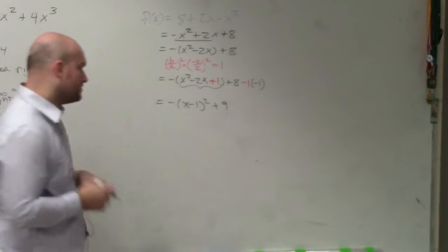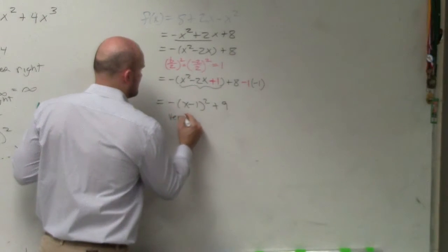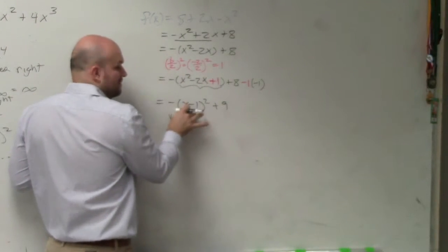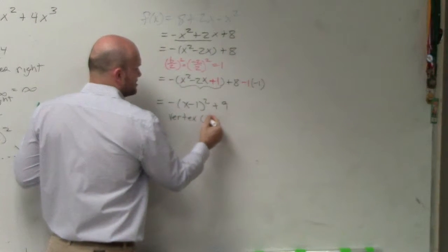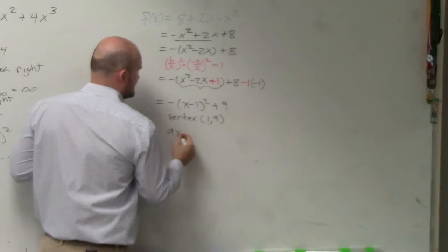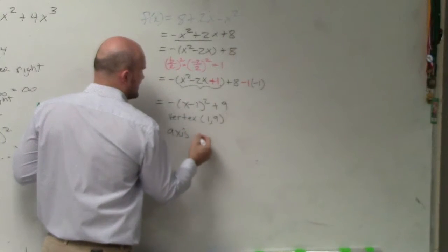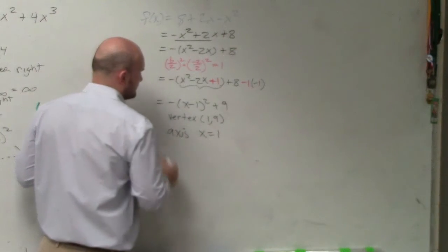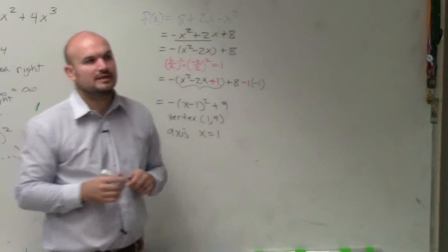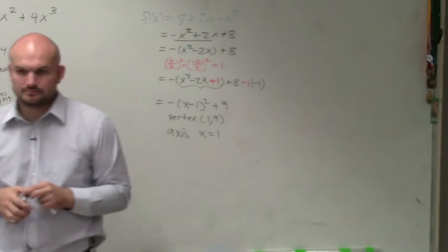Now it's in vertex form, where I know my vertex is - remember, h, k. So it's going to be 1 comma 9, and my axis is x equals h, so that's x equals 1. And there you go.